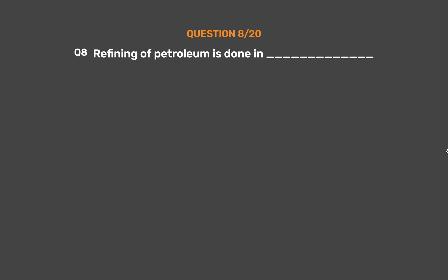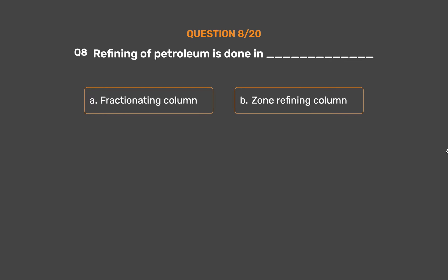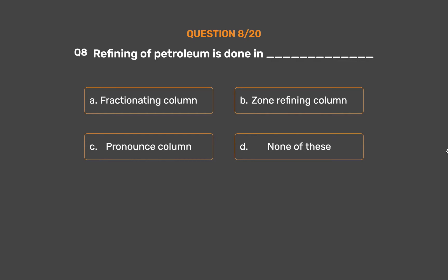Question number 8: Refining of petroleum is done in _____. Option A: Fractionating column. Option B: Zone refining column. Option C: Pronounce column. Option D: None of these.